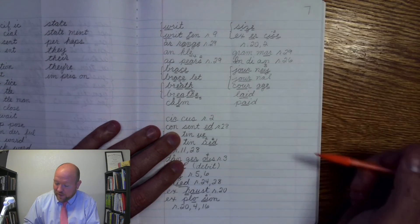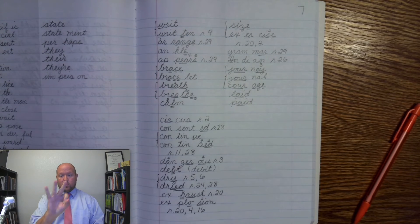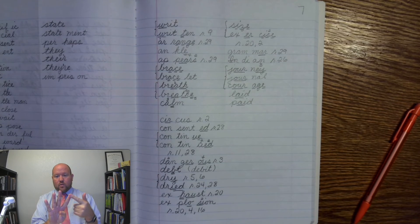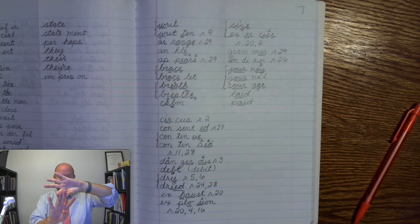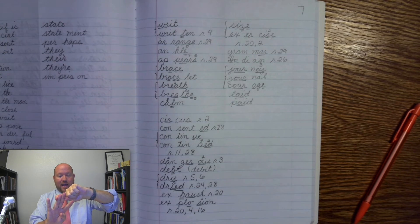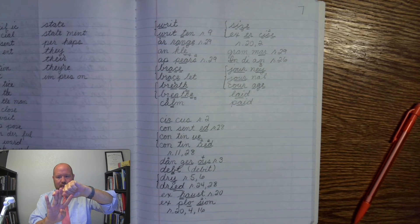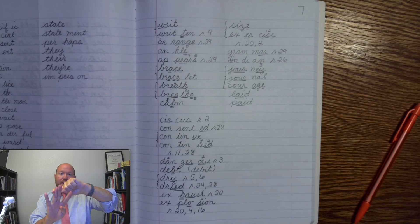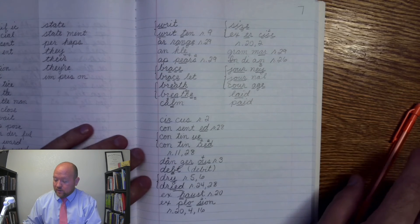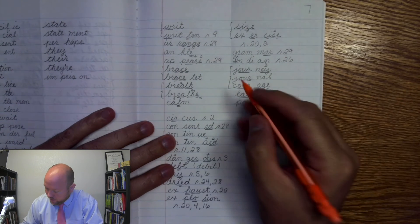All right? And the last one is the word said. Again, now said comes from the word say. But we added D onto it. We're going to change the Y to an I. And now we're going to have an AI phonogram. But it's not going to say what it's supposed to say. It's not going to say an A, like the other way. We don't say say'd. We say said. All right? So, it's saying a sound that it shouldn't say.